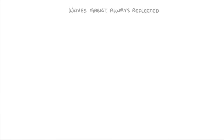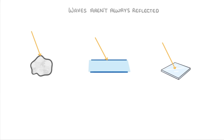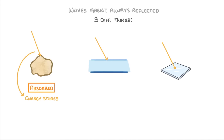The first thing we need to say is that waves aren't always reflected. Whenever a wave arrives at a boundary between two materials, or mediums, three different things can happen. One is that the wave might be absorbed by the material, and so the energy from the wave is transferred to that material's energy stores. Option two is that the wave could be transmitted, which is where the wave enters the material but carries on travelling, and so passes out the other side, which often leads to refraction. The last option is that the wave could be reflected off the surface, and so never even enters the material.